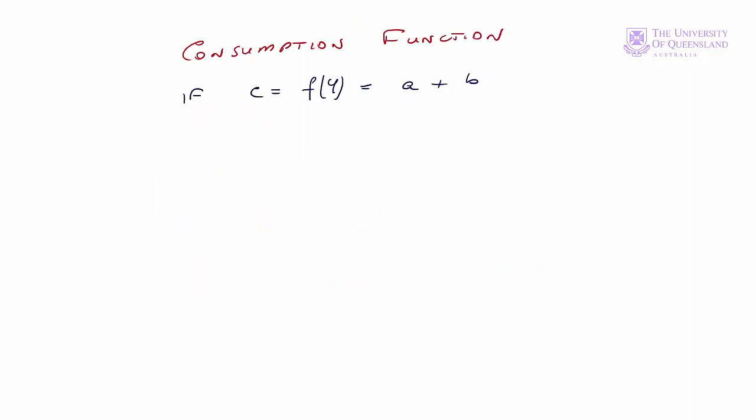A little more on the consumption function. Sometimes we assume that the consumption function is a linear function, a plus bY. In that case, f prime Y is equal to b. That's equal to the marginal propensity to consume. And then dY/dI would be 1 over 1 minus b, which is equal to 1 over 1 minus the marginal propensity to consume.